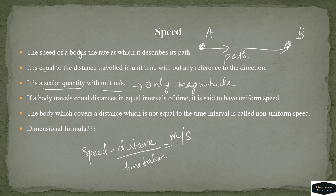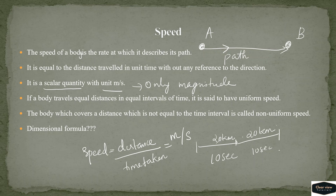If a body covers equal distance in equal intervals of time, for example covering the same distance every 10 seconds, that body is said to have uniform speed. If the body covers unequal distances in equal intervals of time, it is said to have non-uniform speed.